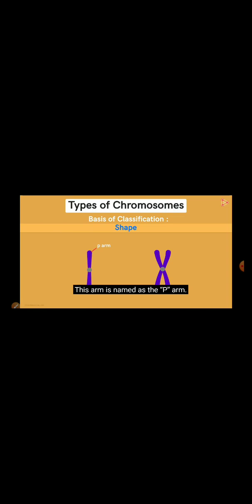This arm is named as the P arm. And this is known as the Q arm. So, how do we recognize which is the P and which is the Q arm? Is it based on their positions? Nope. It depends on the size. The smaller arm is the P arm, while the larger one is the Q arm. So, this chromosome has one P and one Q arm. While this one has two P and two Q arms.